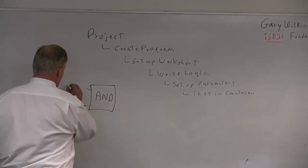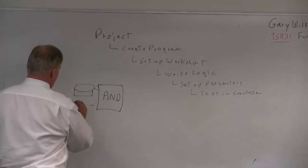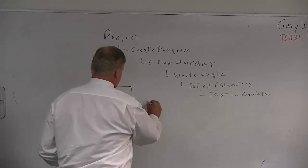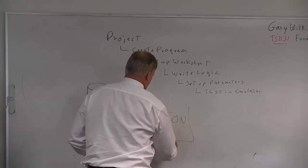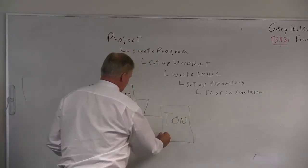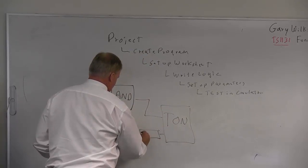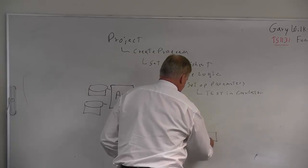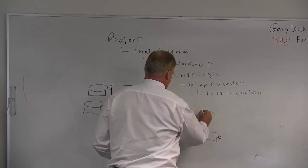AND gate. So that's going to be a tag, and the associated alias is the square box. Then it's going to go into something called a TON. Find out that's a timer. Then you're going to have a local variable there, and then you're going to have another tag name.